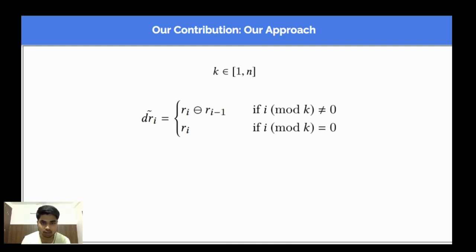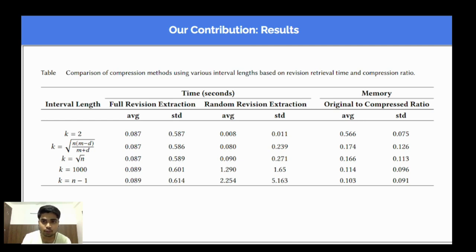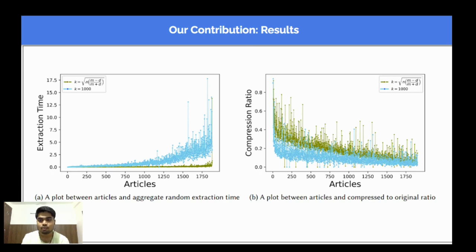First, using a fixed value of k, we showed that we can come up with an optimal value of k. Using this, if we compress the dataset of any revision history — let's say a Wikipedia article or Wikia — we can extract any revision in very little time, achieving the maximum compression ratio. Moreover, we saw that using a variable length as well, we came up with an algorithm where rather than fixing the size of k, we made it a variable, and we also achieve optimal compression and extraction time. We also compared our results with the benchmark baseline result proposed by Fincheske, and showed that our method performs better in terms of extraction time and compression ratio.